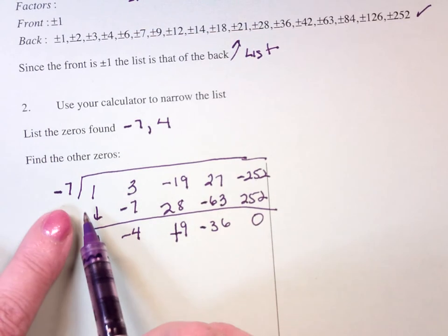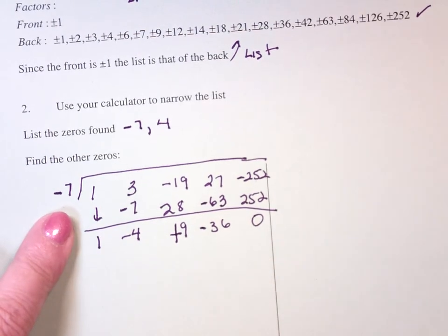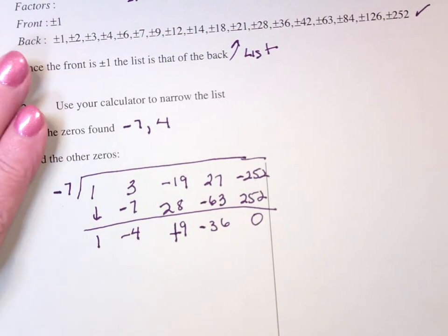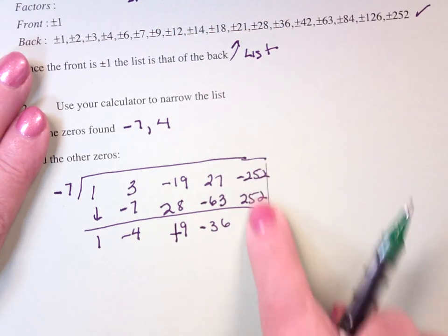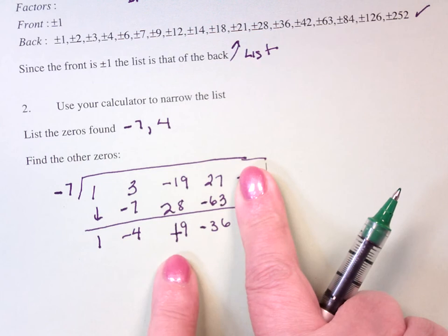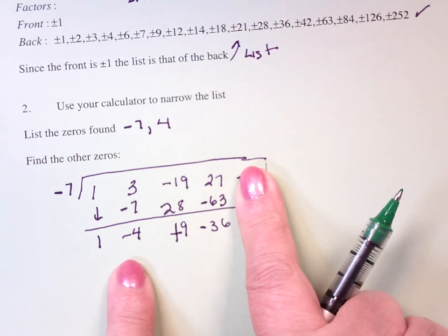So, that I know what one of the zeros is, it's negative 7. Now, I'm going to divide out the other one. Now, this is now a cubic. Why? Because I've gotten rid of one term. This is the constant, X, X squared, X cubed. That's the cubic.